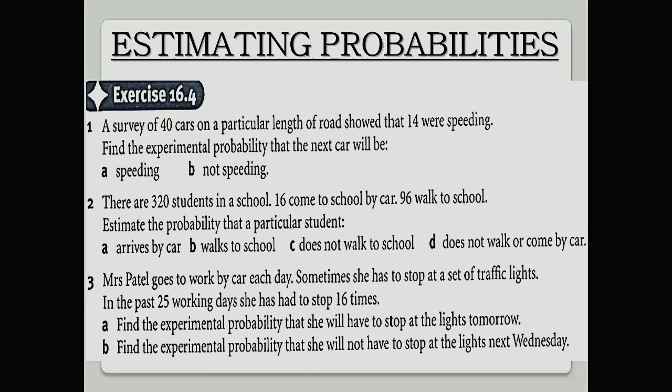Today we will learn estimating probabilities, Exercise 16.4. Question number one is a survey of 40 cars on a particular length of road showed that 14 were speeding. Out of 40 cars, there are 14 that were speeding.